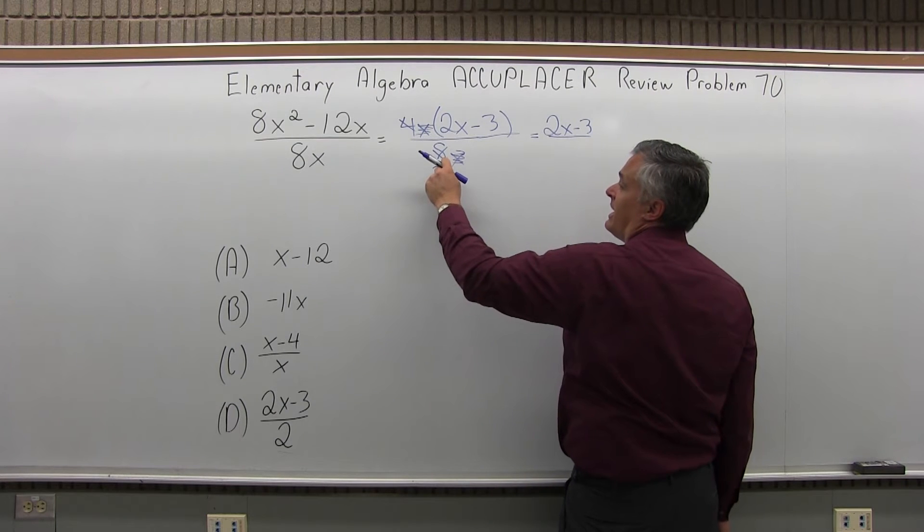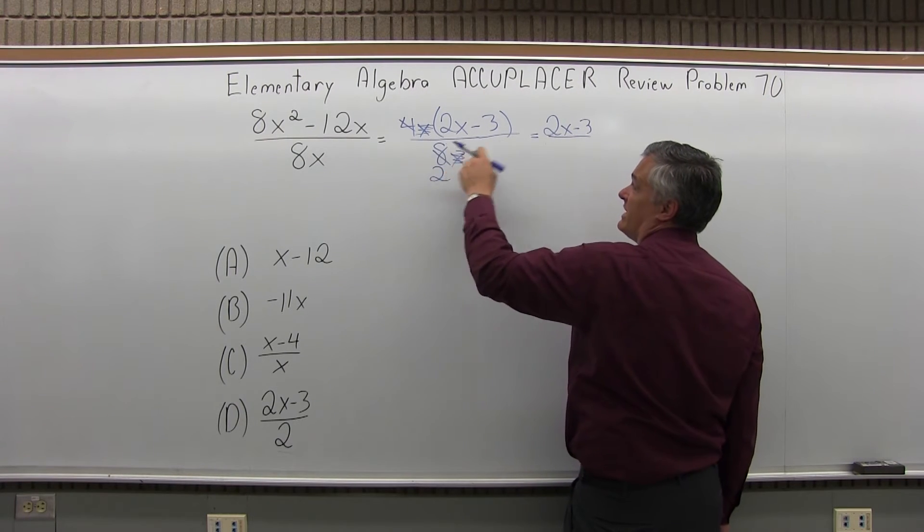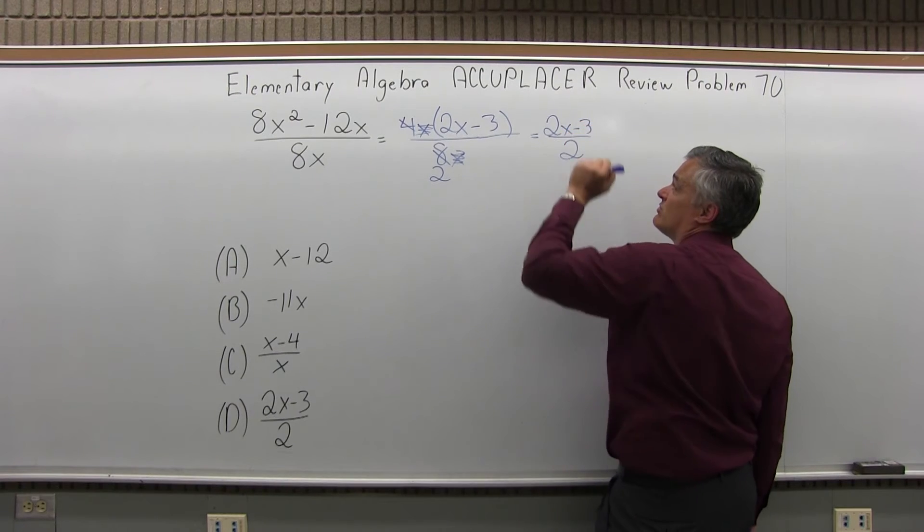In the bottom, I just have 2. The 8 got knocked down to 2, and the x is gone. So I have 2x minus 3 over 2.